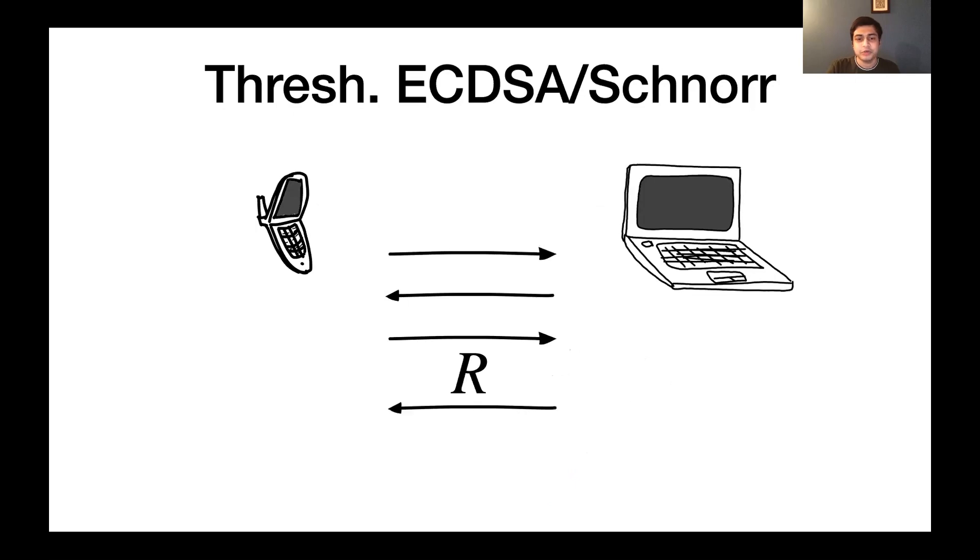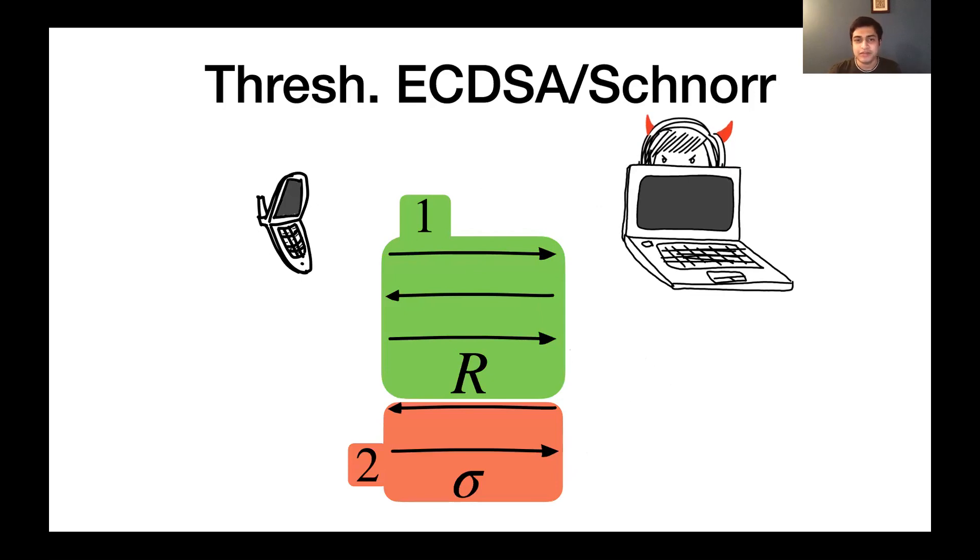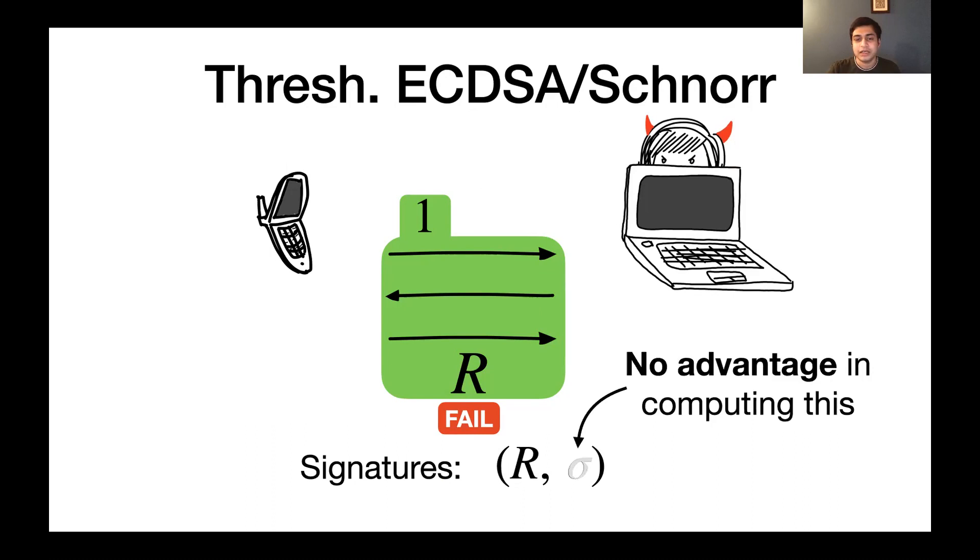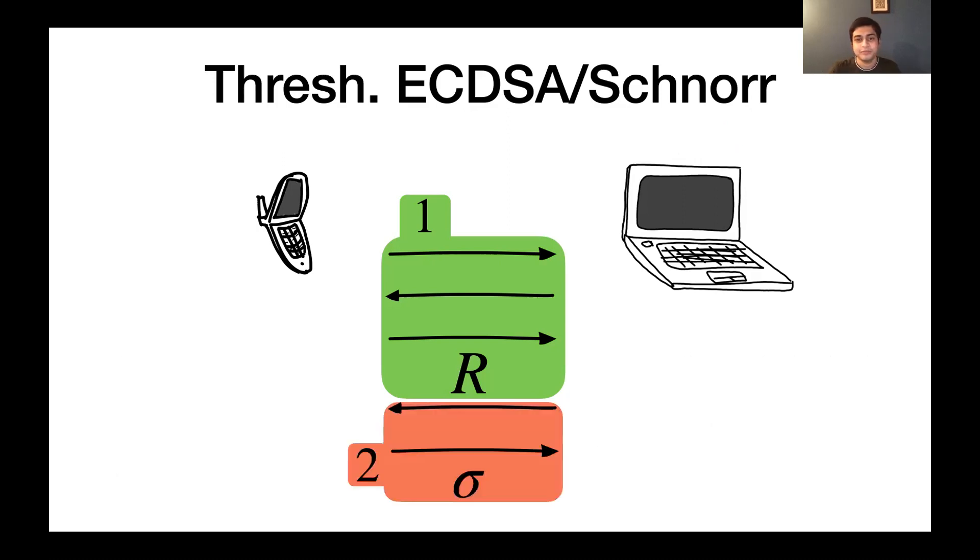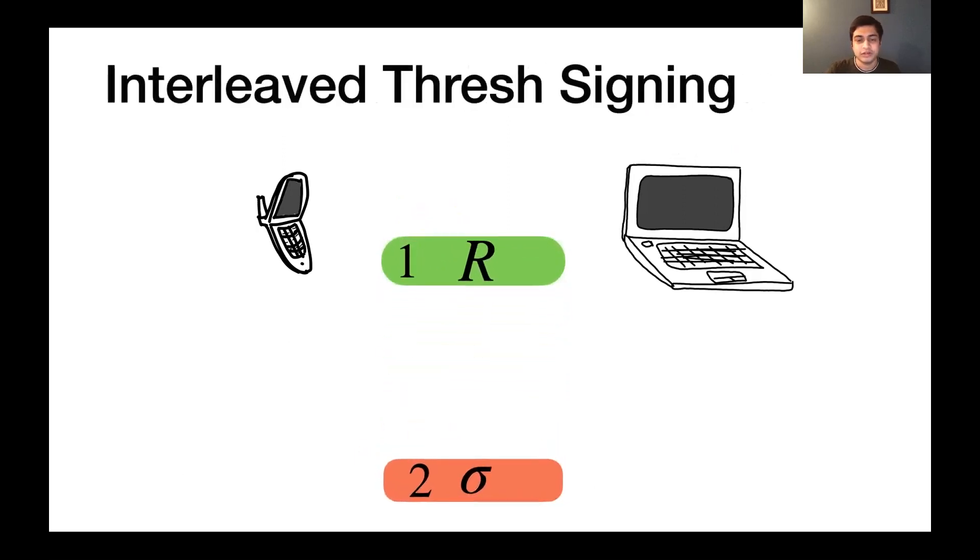So many threshold ECDSA and Schnorr protocols have this nice property in that they can be separated into two distinct phases. In phase one, this nonce r is produced. And in phase two, the signature is completed to produce sigma. And they have this interesting property where if an attacker were to abort the protocol immediately after phase one and not run phase two, then the induced signature, that is the sigma that will verify for this nonce r, remains inaccessible. That is, the adversary has no advantage in computing the sigma that would be the full signature for this nonce r. And this is achieved by most natural threshold ECDSA schemes.